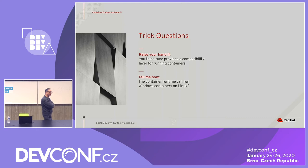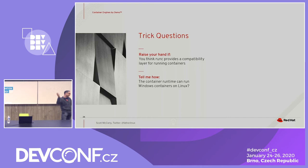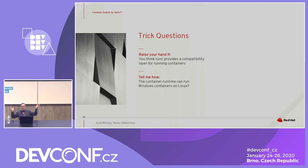Trick question: could we run a Windows container here? No — runc just takes this config file and runs a process. These are Linux processes; that's all they are. Possibly with kata containers you could do it by firing up a VM inside. But with just basic containers, a Windows container is not possible.